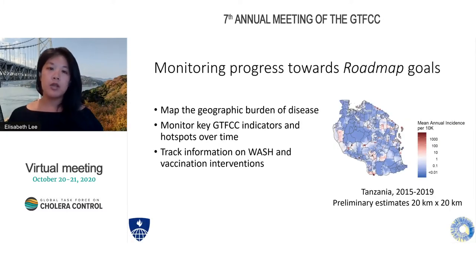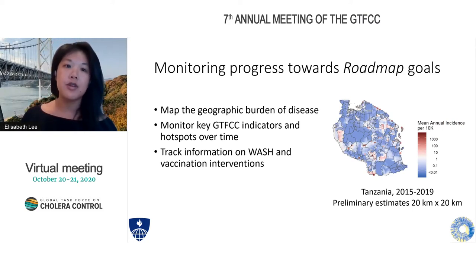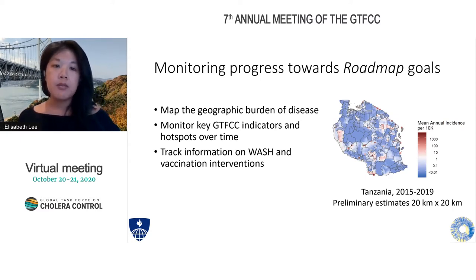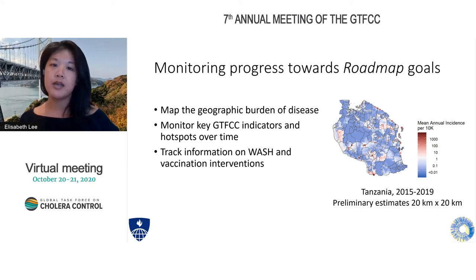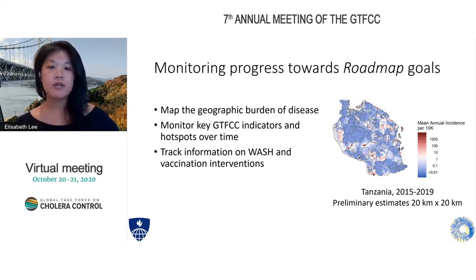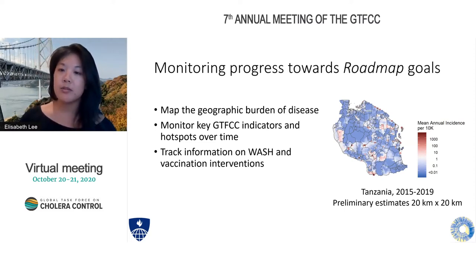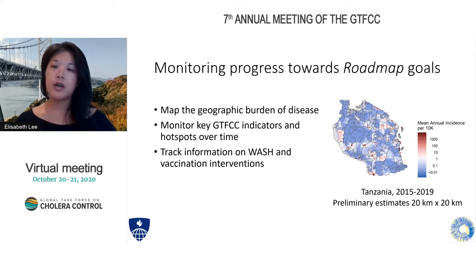In thinking about how we want to monitor progress, there are a lot of different important activities to take into consideration. We need to think about mapping the geographic burden of disease, being able to monitor key GTFCC indicators and hotspots over time so that we can see how countries are progressing towards their NCPs, as well as being able to track information on risk factors like water and sanitation, and where vaccines have been deployed. On the right, we have an example of some preliminary estimates of mapping work done in Tanzania and across sub-Saharan Africa.